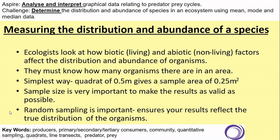Moving through the PowerPoint, we've revised levels of organization and looked at how ecologists examine biotic (living) and abiotic (non-living) factors and the way they affect the distribution and abundance of organisms. The simplest way to do that is with a piece of equipment called a quadrat, which is usually 0.5 meters, giving an area of 0.25 meters squared. The sample size is very important to make results as valid as possible, and we're going to learn about random sampling in the next few slides.